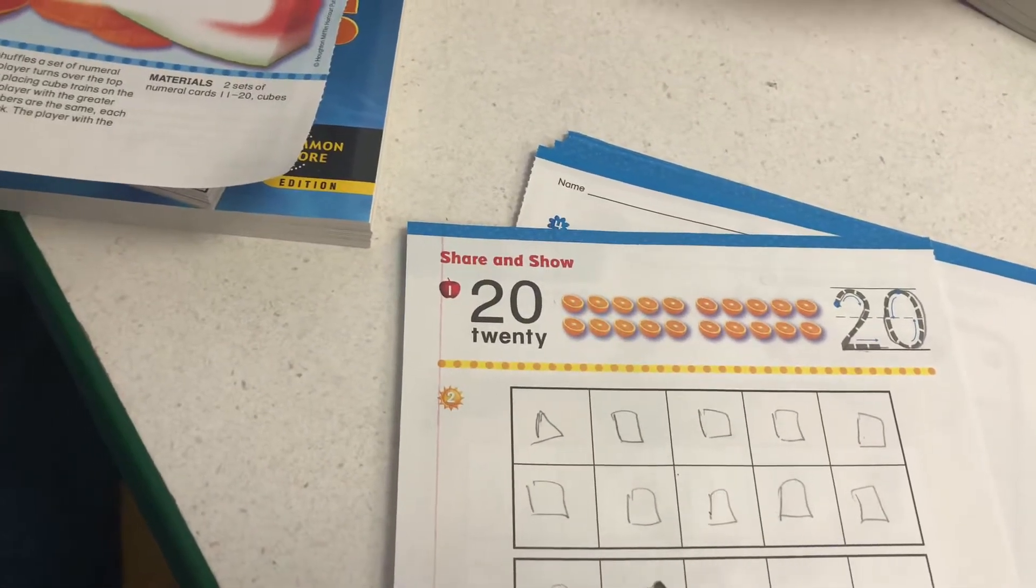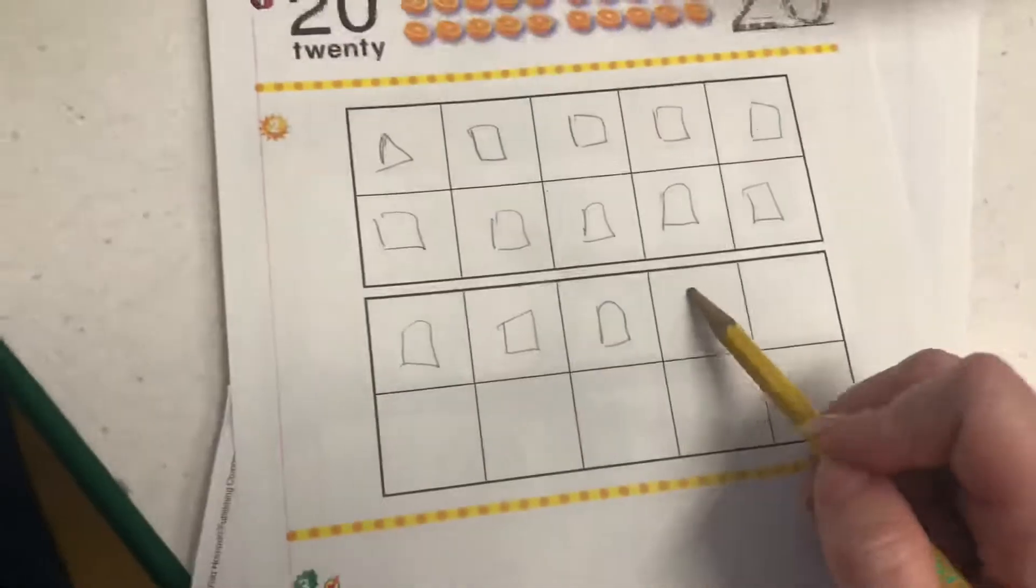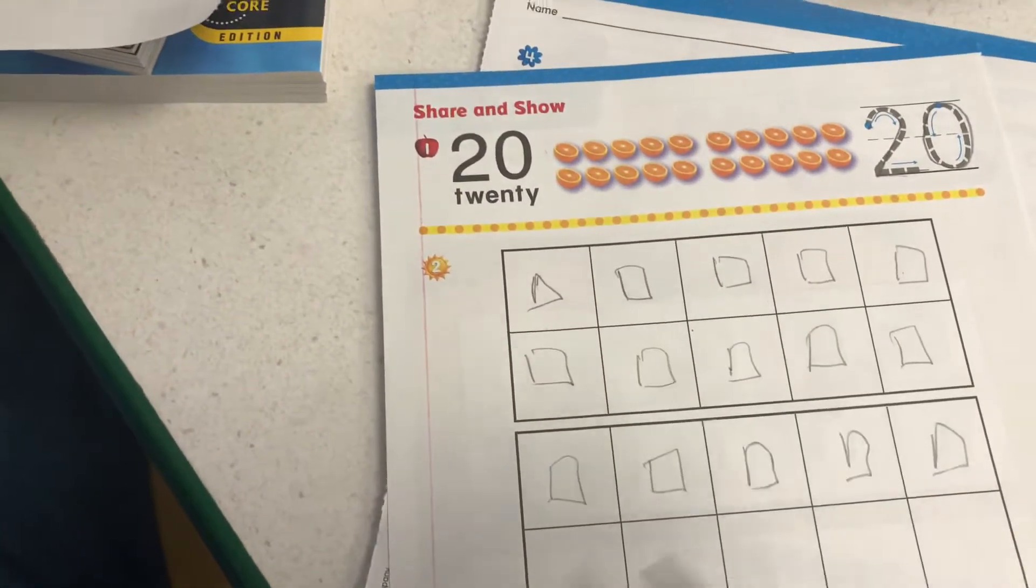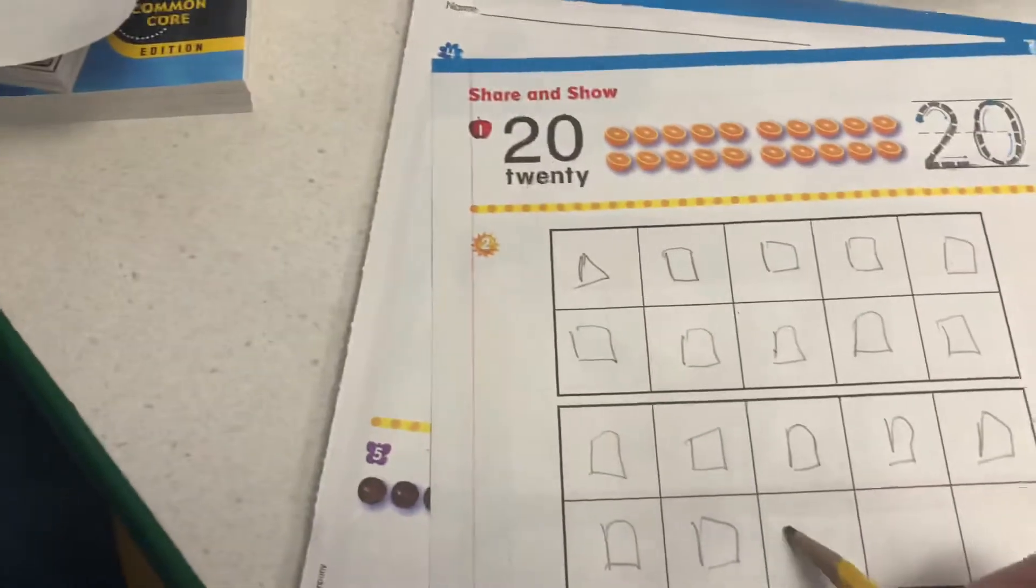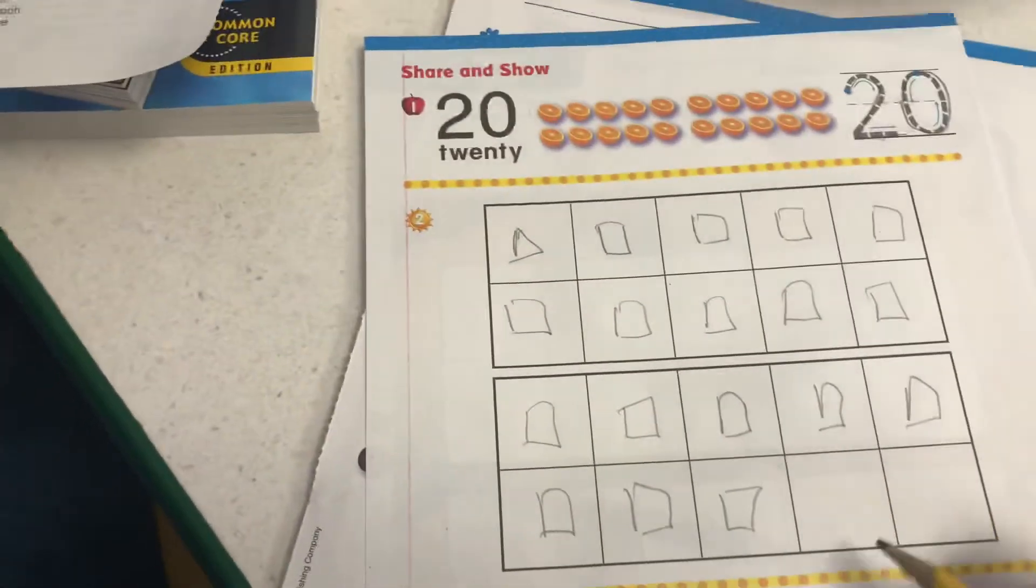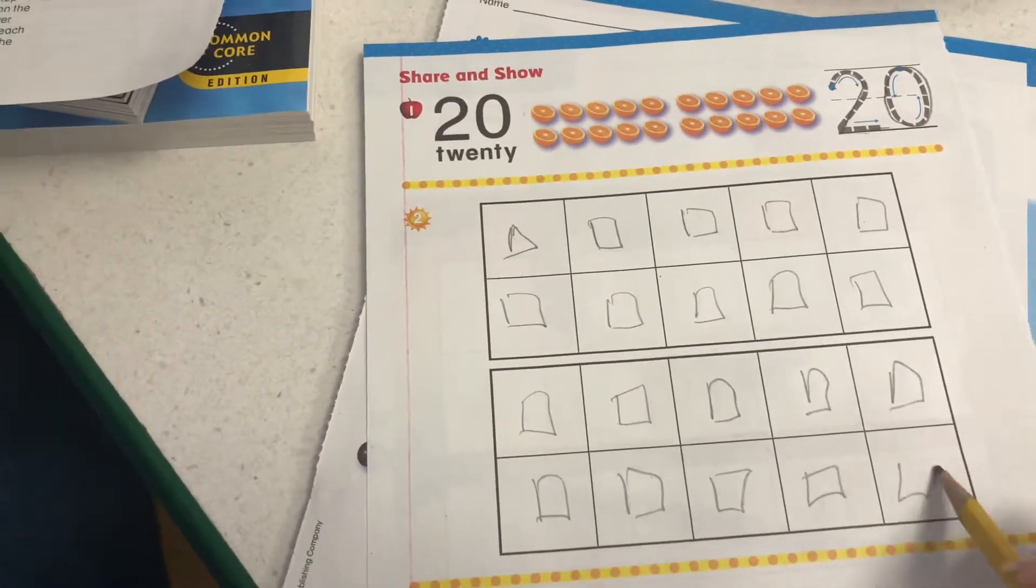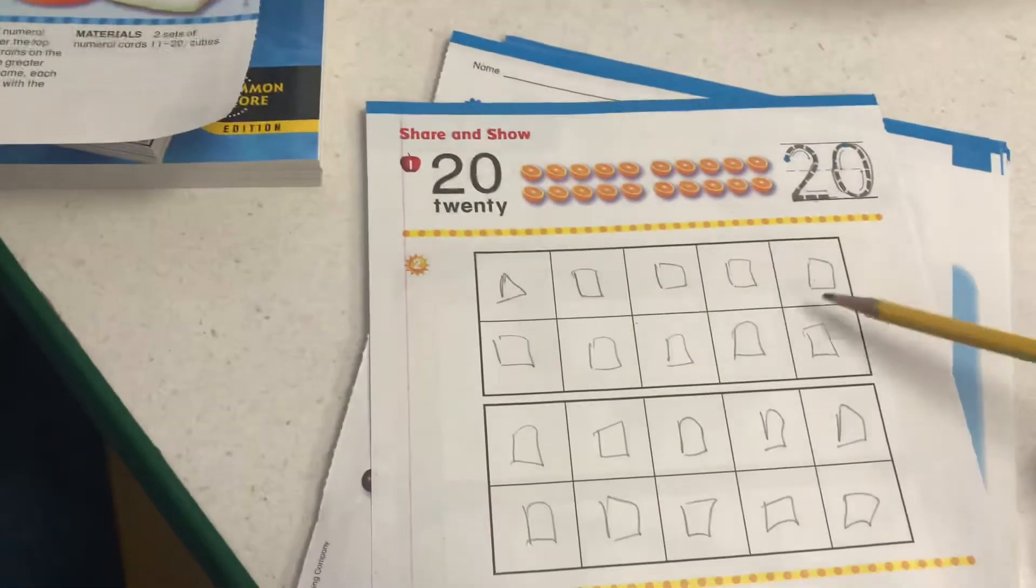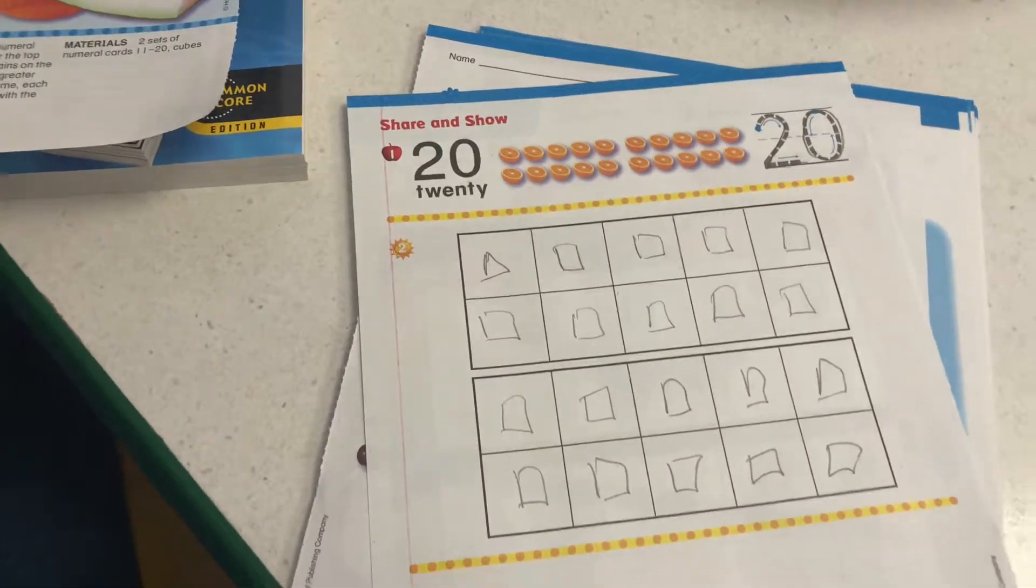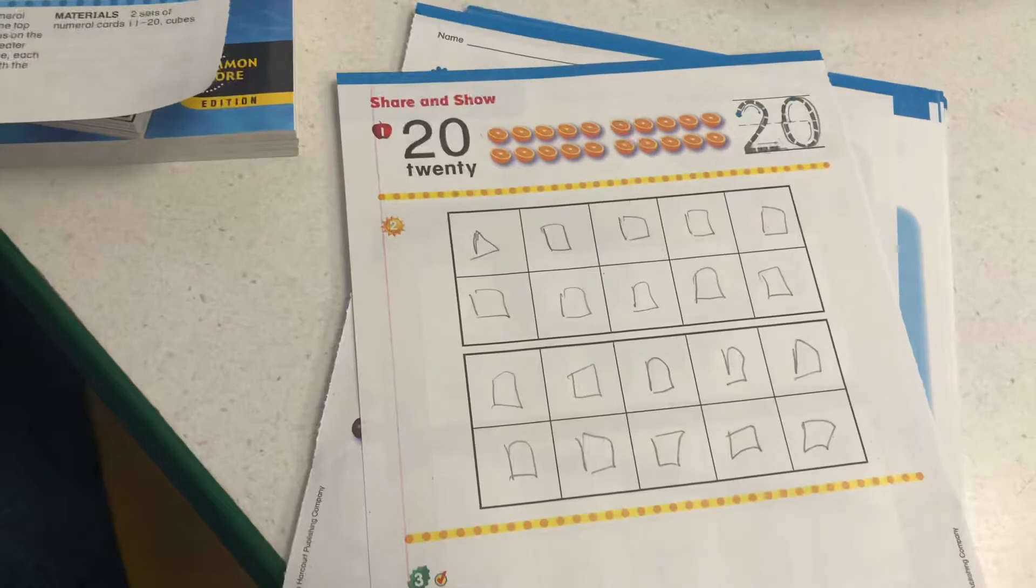11, 12, 13, 14, 15, 16, 17, 18, 19, 20. 10, 20. Like we do in morning meeting, we count by 10s. All right.